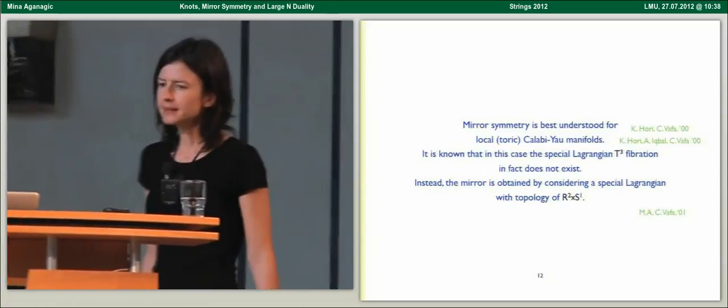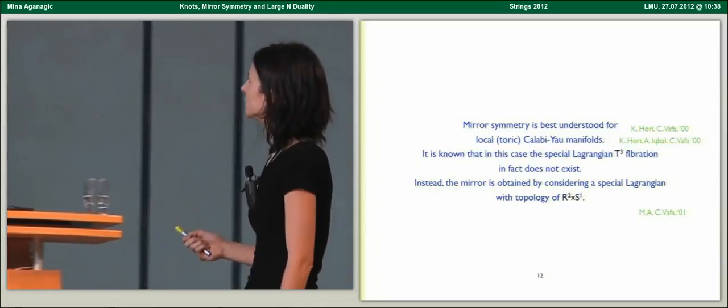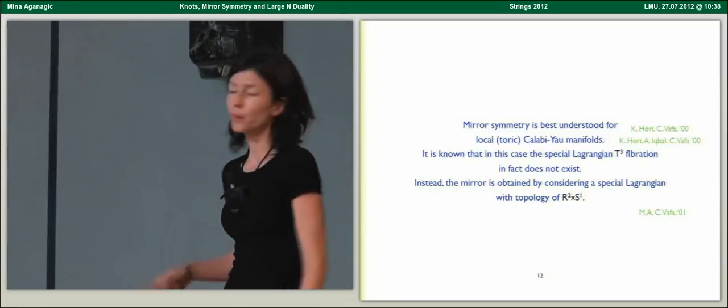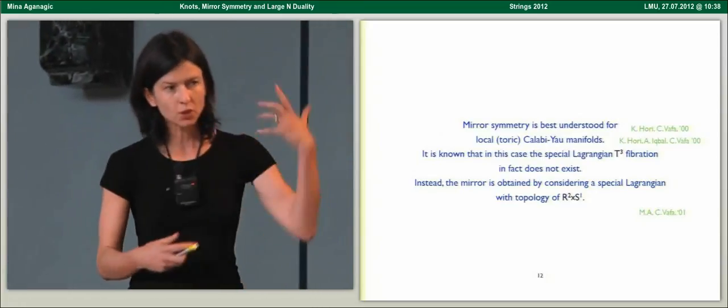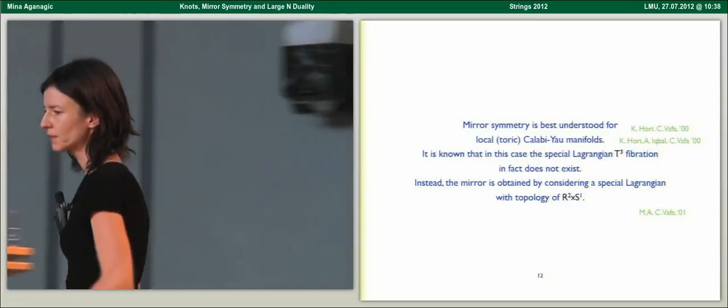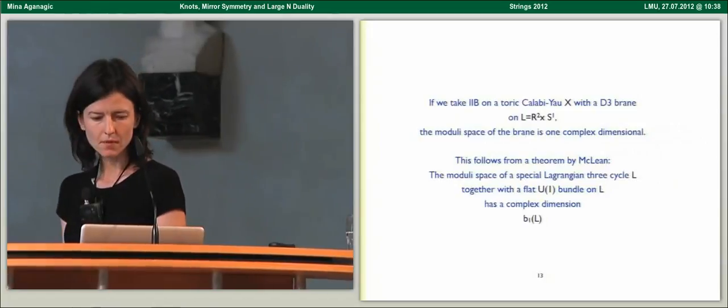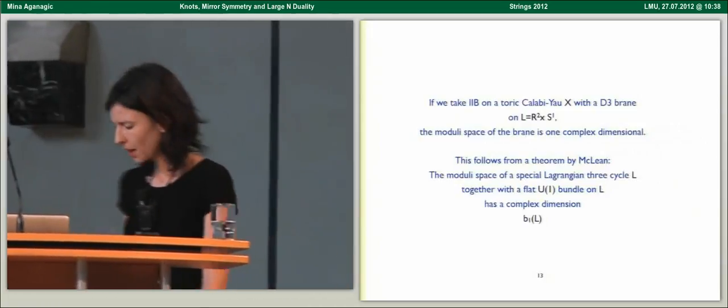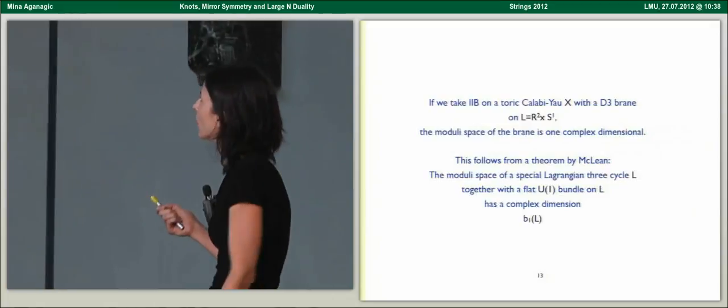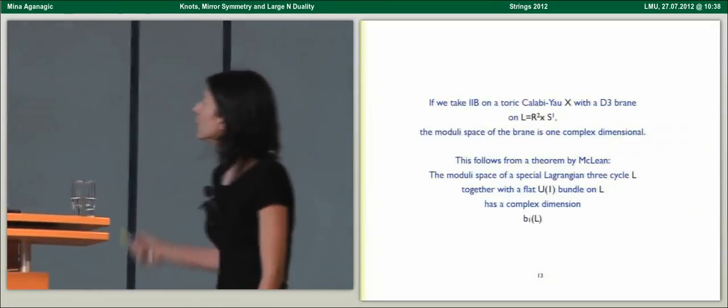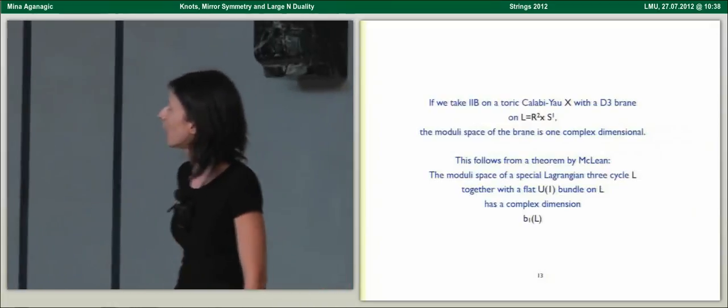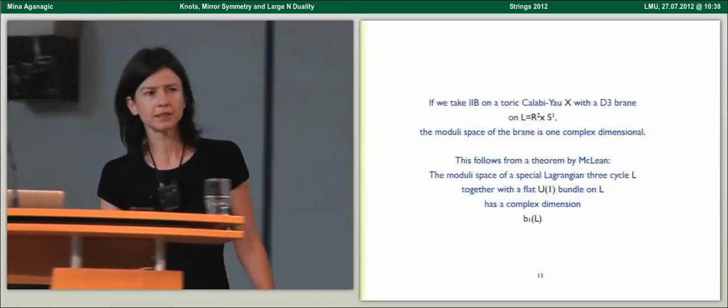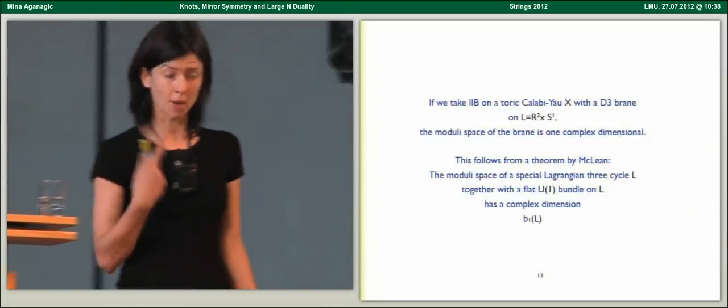Instead, what happens is that the mirror is obtained by considering a special Lagrangian of topology R2 times S1. There's only one compact circle in a D3 brane. We take type 2B on this local Calabi-Yau X with a D3 brane on a Lagrangian of this topology, and the moduli space of the brane is one complex dimensional.